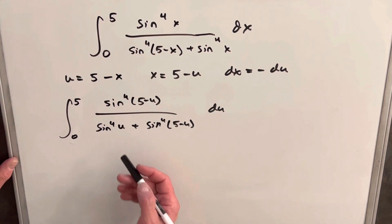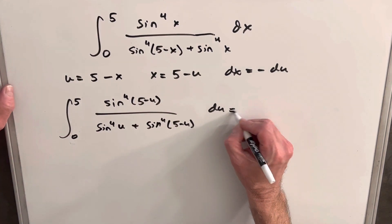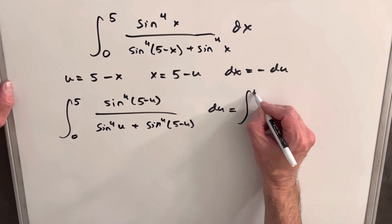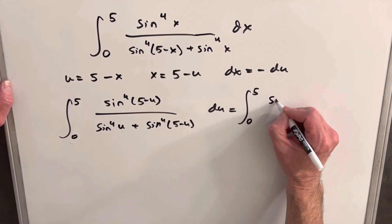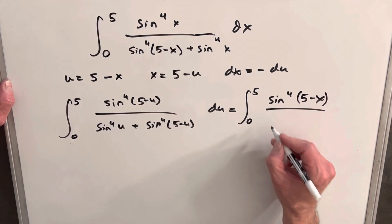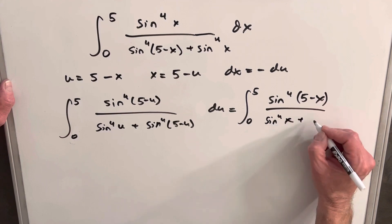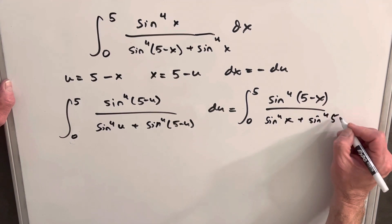And then for the next step, what I'm going to do is we have this in terms of u, but I actually want to do something to get it where I can work with our original integral. So I can just change this variable back to x. There's no problem with that in a definite integral. The variable name doesn't matter. So we'll rewrite this as 5 to 0, sine to the 4th, 5 minus x, over sine to the 4th x, plus sine to the 4th, 5 minus x.